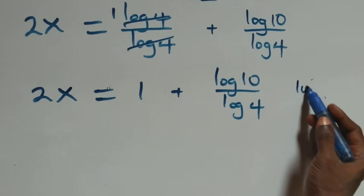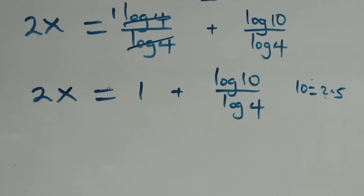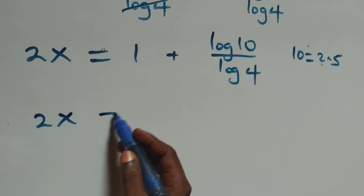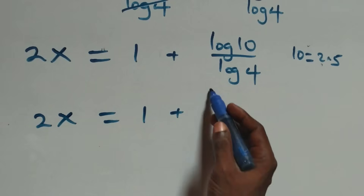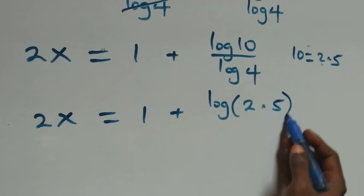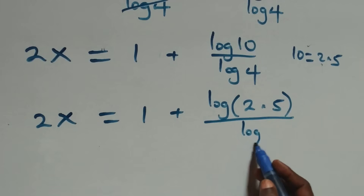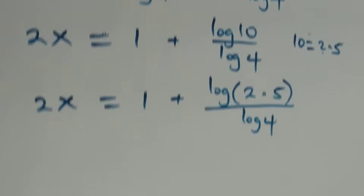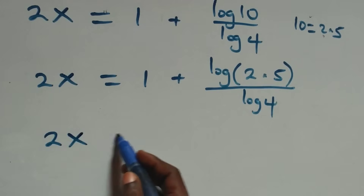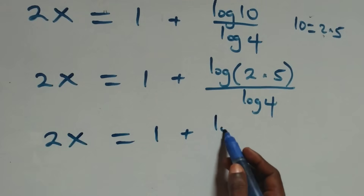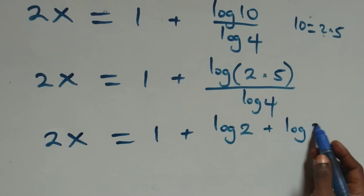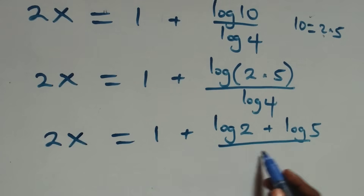Also, we can express 10 as 2 times 5, which implies 2x equals to 1 plus log of 2 times 5 over log 4. This also follows from the law of logarithms, and what we have becomes 2x equals to 1 plus log 2 plus log 5 over log 4.